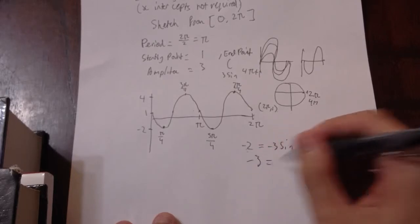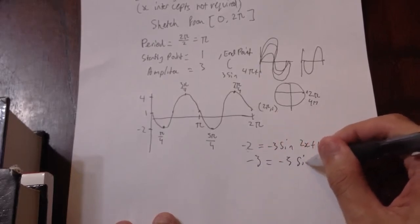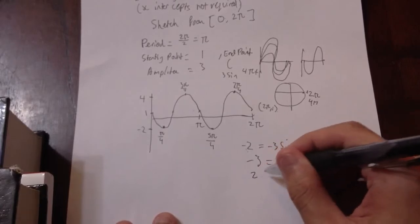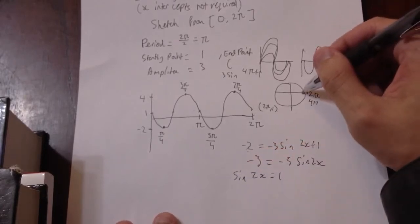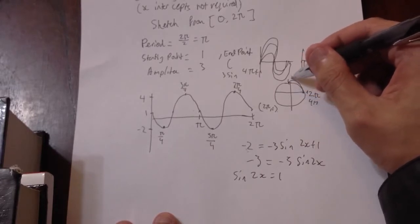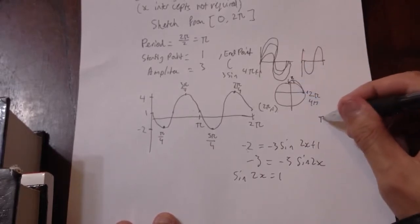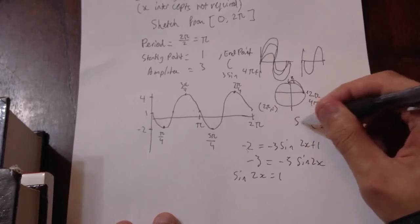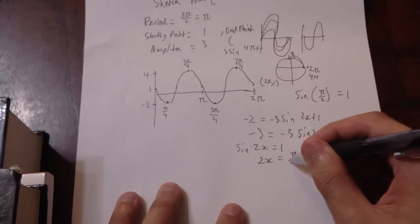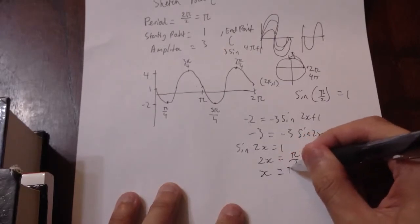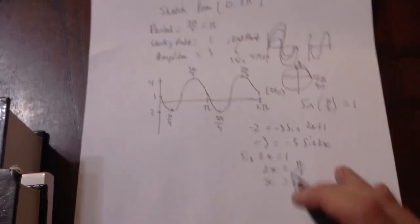Then minus 3 equals minus 3 sine 2x. Therefore sine 2x equals 1. We get a height of 1 when the angle is π on 2. So we put π on 2 into sine, that gives us 1. Therefore 2x equals π on 2, or x equals π on 4.